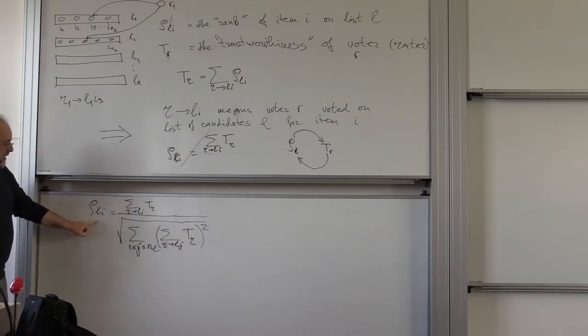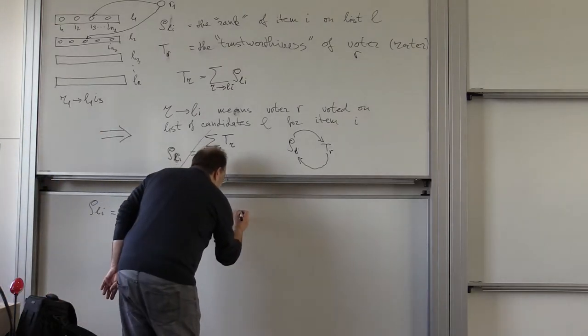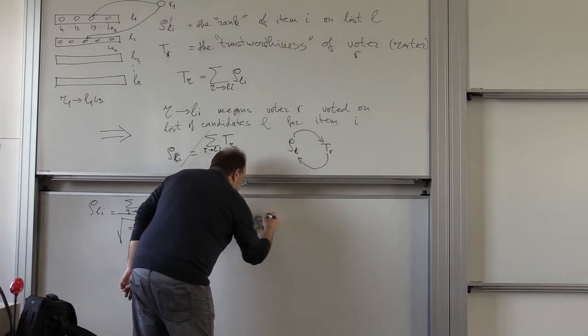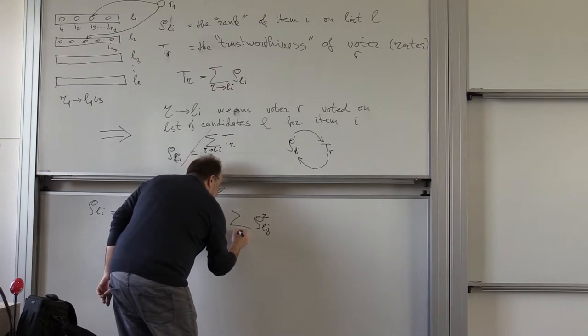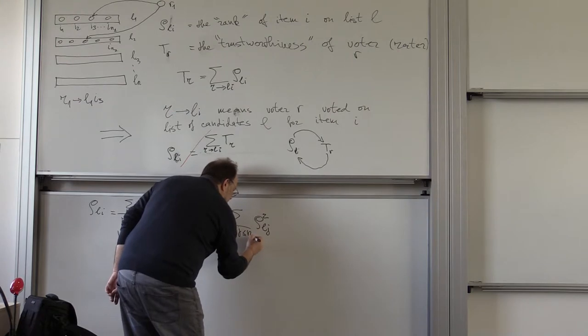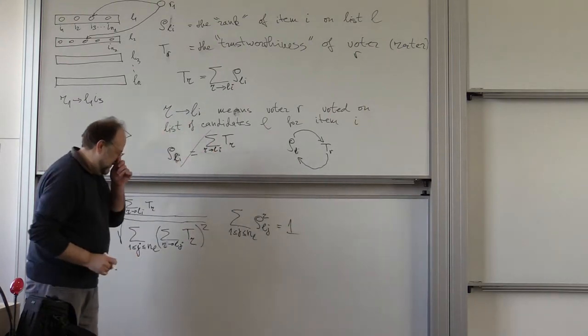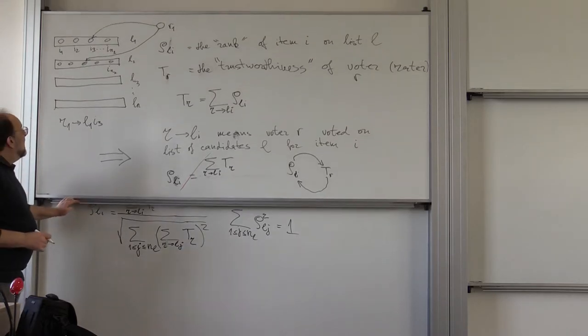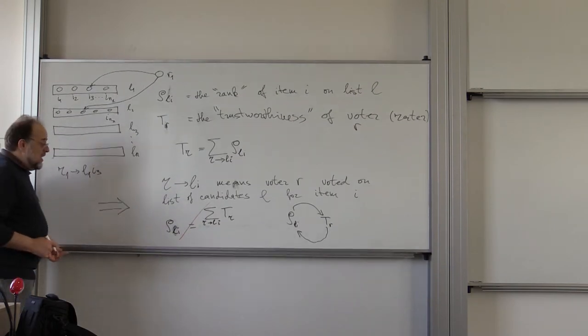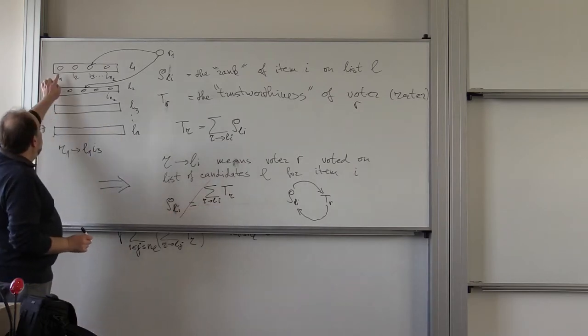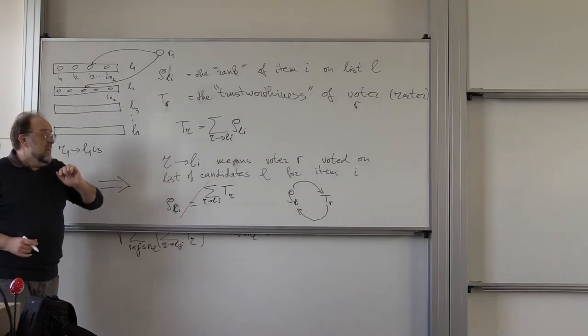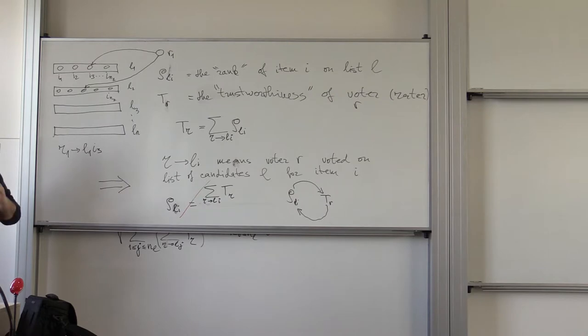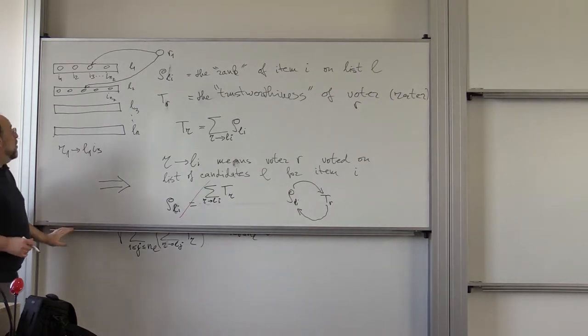So what does this guarantee? This guarantees the following property, that for every list L, sum of rho_L,j squared, for all j between 1 and number of items on the list is equal to 1. So this prevents things from exploding. This is essentially the following. You simply compute the ranks as this simple sum. You get all of the sums for each object. And then you divide everything with sum of the squares of whatever you got for each object.